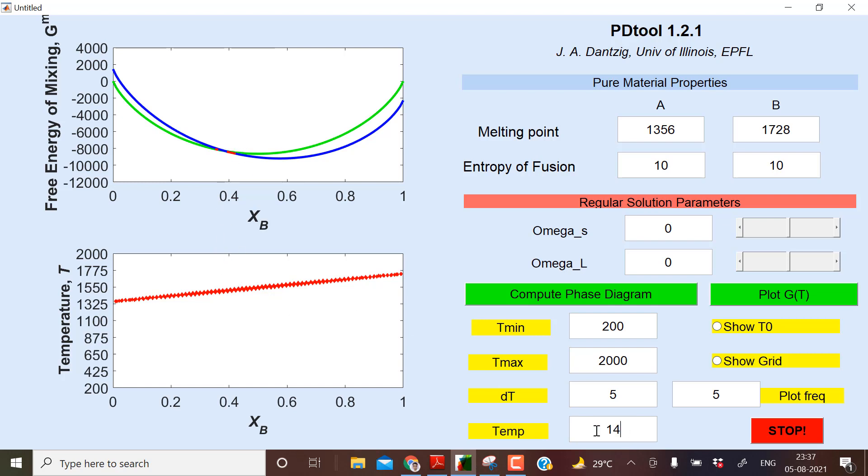So it is like this. So this is a very beautiful software where you can draw the phase diagram and you can understand. Now suppose for this case if I change the value of omega_s and omega_l, something like this, then how the graphs will be? This you can see.